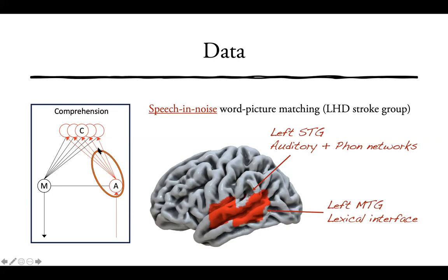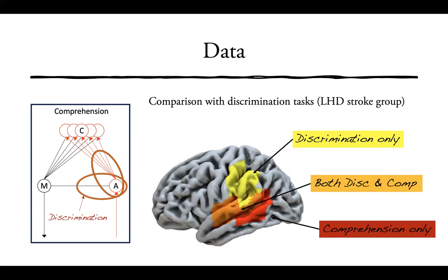Comprehension indeed seems to involve this sub-portion of the network and doesn't necessarily involve the motor part. When we look at the discrimination tasks — the sorts of tasks Poeppel and I were concerned involved motor abilities rather than normal comprehension mechanisms — that is in fact what this large-scale study bears out. For discrimination only, we see lesions corresponding to areas moving up into the dorsal stream, not involving the ventral lexical-related areas. Both discrimination and comprehension involve the phonological region, consistent with the model where the split point between the streams is in phonological networks.